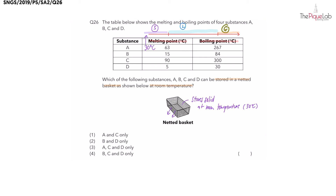We can repeat the same steps for substance B. Inserting 30 degrees onto the number line, 30 degrees falls between 15 degrees and 84 degrees. So substance B is in liquid state at this temperature.